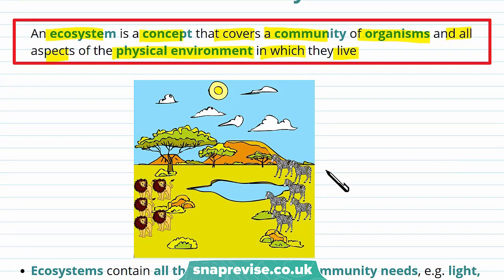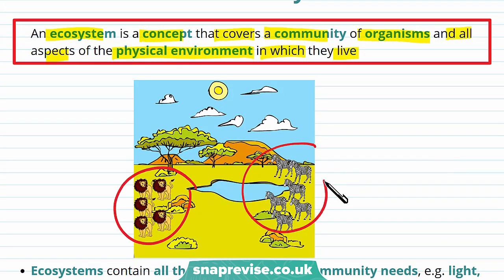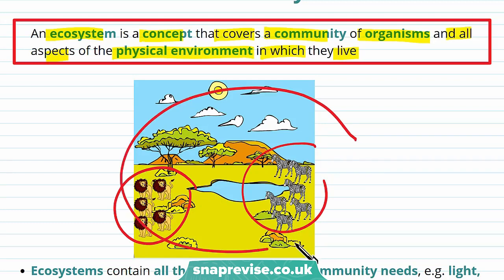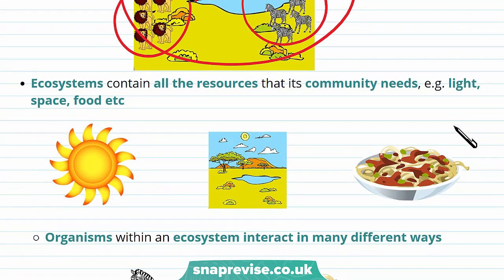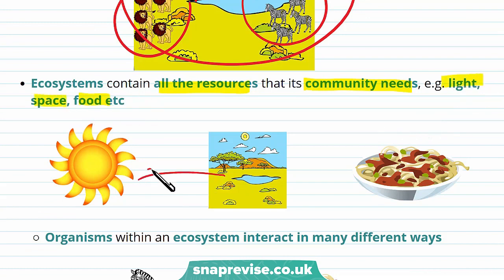Here is an example of an ecosystem. You can see there's a community of organisms and they all live in a physical environment, and the physical environment and the community make up an ecosystem. Ecosystems contain all the resources that its community needs — for example, light, space, and food. Without these resources, the organisms in the ecosystem may not be able to survive.